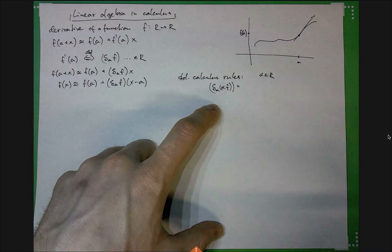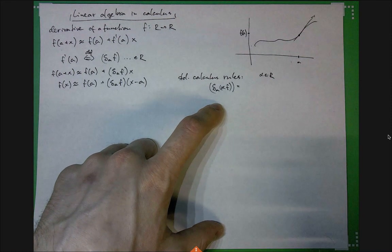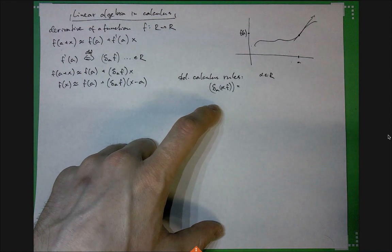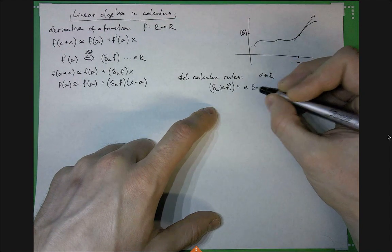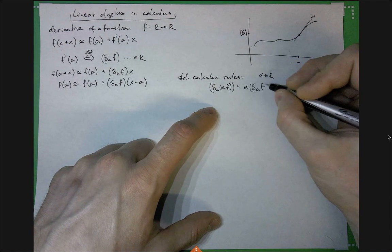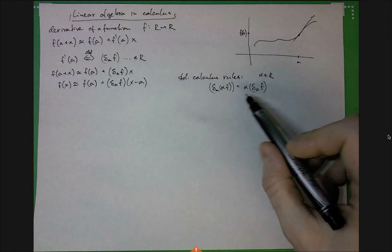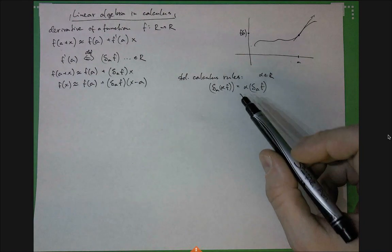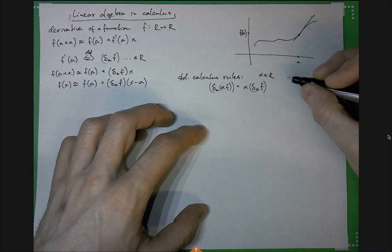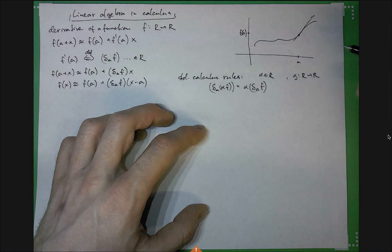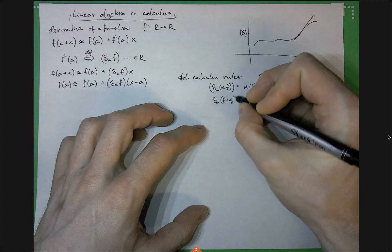You certainly know the standard calculus rules. If I have a function multiplied by a scalar alpha, the derivative of alpha·f is alpha times the derivative of f — that's d_a f. This is one part of the derivative being a linear operation. The other part is: if I have two functions f and g both going from R to R, then the derivative of f plus g is the derivative of f plus the derivative of g.